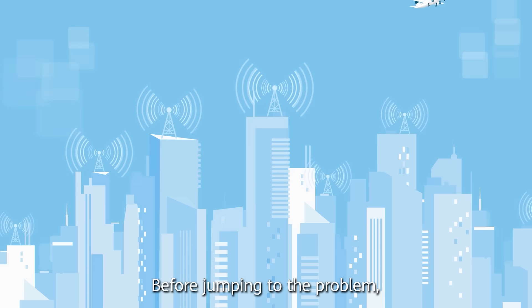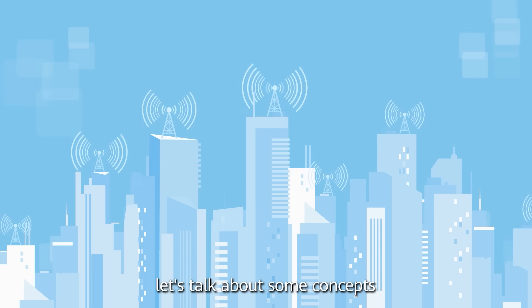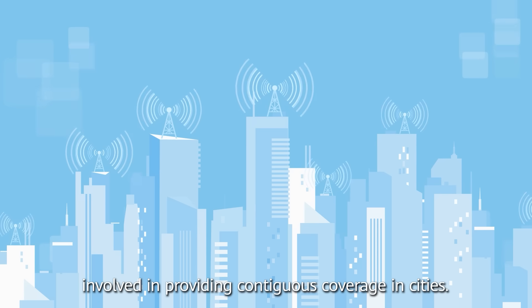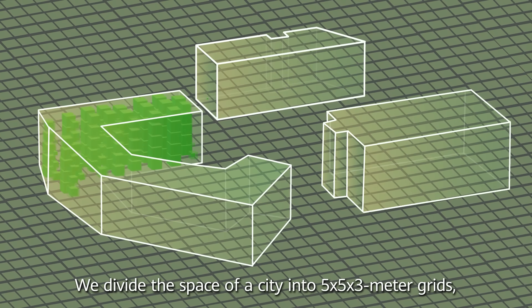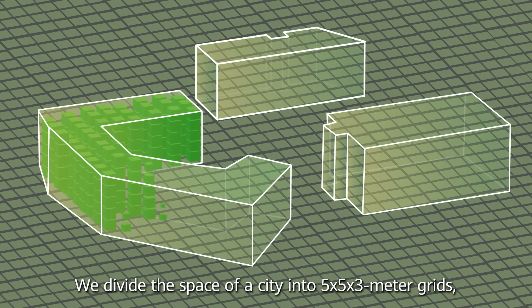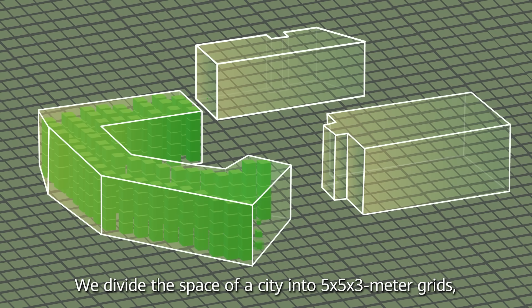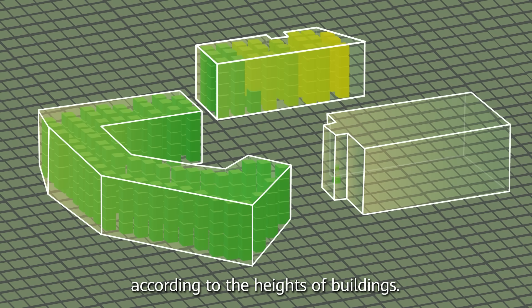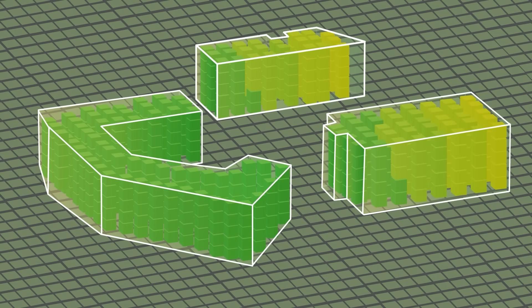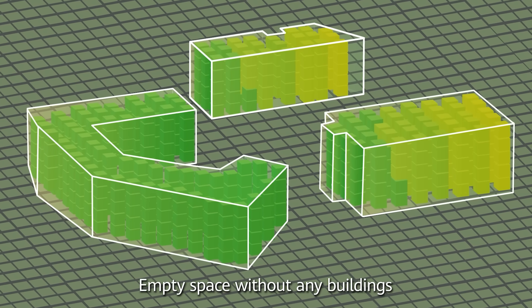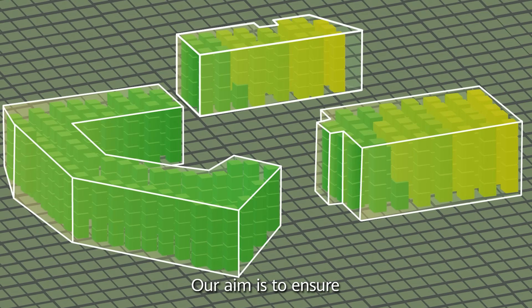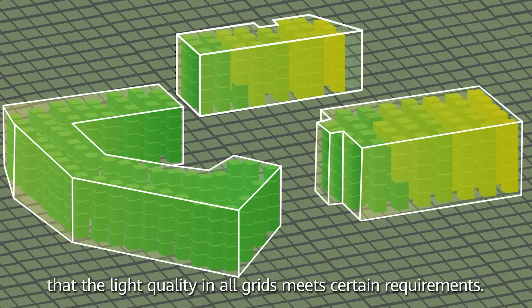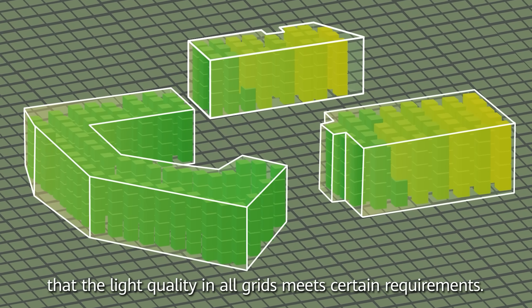Before jumping to the problem, let's talk about some concepts involved in providing contiguous coverage in cities. The first is grid. We divide the space of a city into 5 by 5 by 3 meter grids, which are layered on top of each other according to the height of buildings. Empty space without any buildings is composed of only one layer of grid. Our aim is to ensure that the light quality in all grids meets certain requirements.